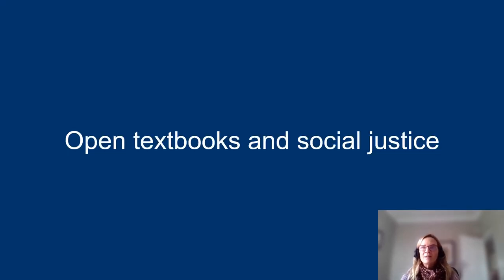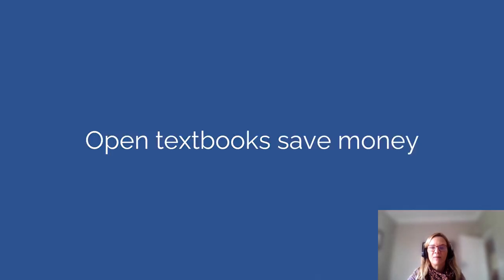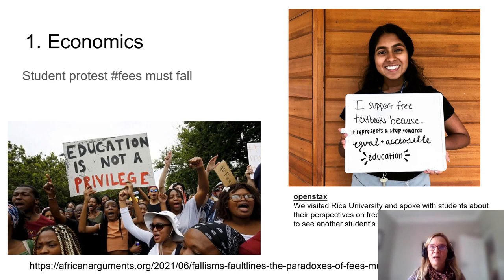These are some of our findings from work beginning in 2018. What is the relationship between open textbooks and social justice? First, open textbooks save money, and that is where the economic dimension comes in. We saw across South Africa protests about fees must fall — successful protests that led to more student support, but not support for textbook purchases. The other image is from OpenStax at Rice University, where students stood up for their rights and said how important it is that textbooks should be free.